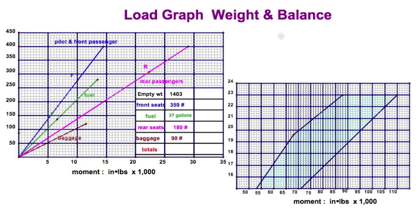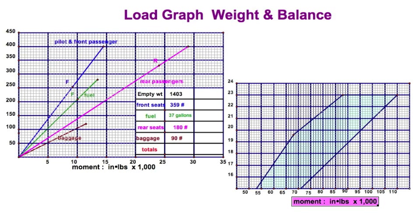This is a load graph weight and balance, and we're going to review how to do this so we'll pass the FAA written test. You're going to see two charts. First, the one on the left — I've got the individual components here of the weight and balance, for example, the fuel and the front seat passengers, rear, etc. We're going to add up weight, add up moments. We'll get that all from this first chart, and then we're going to plot it on the chart on the right. If it falls inside that shaded envelope, we're okay to fly.